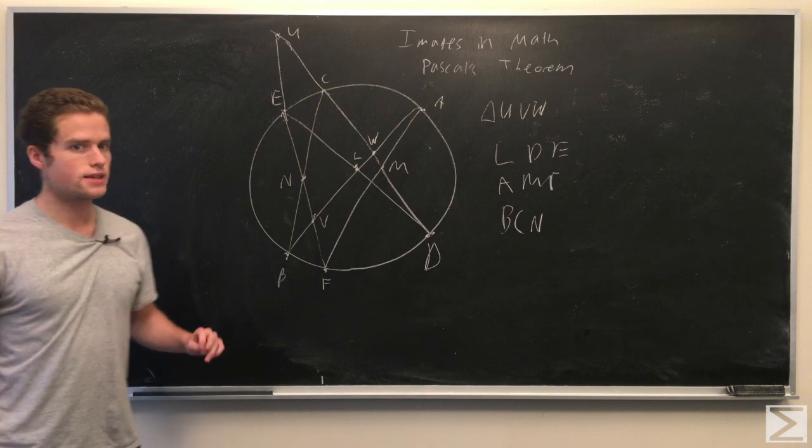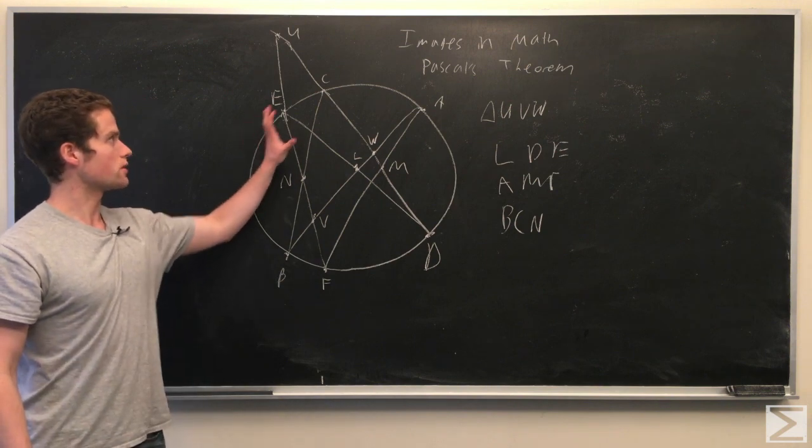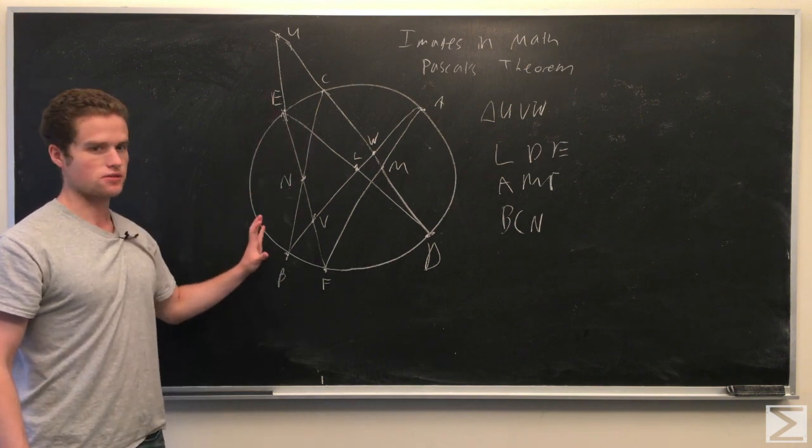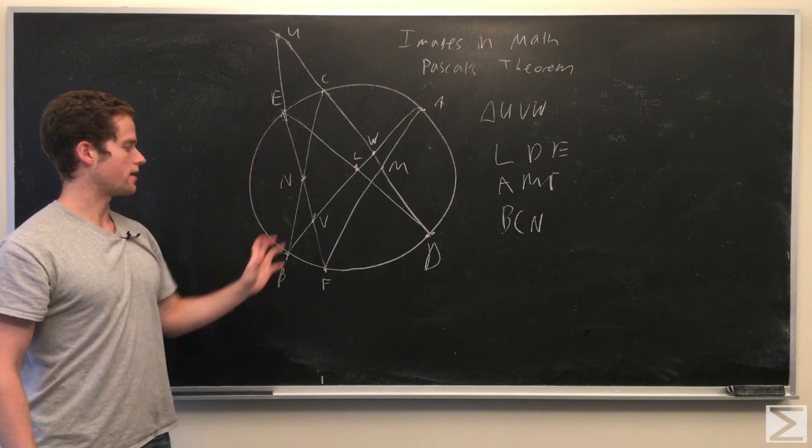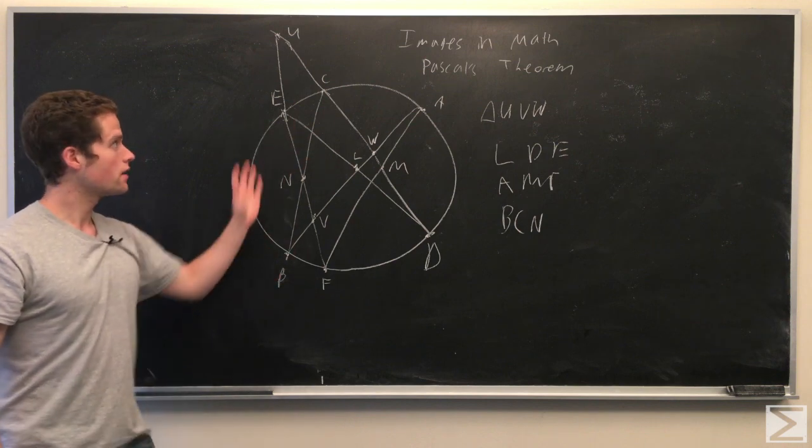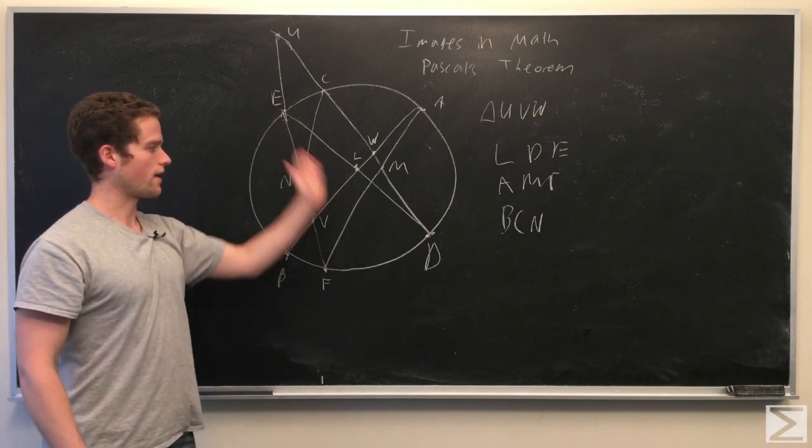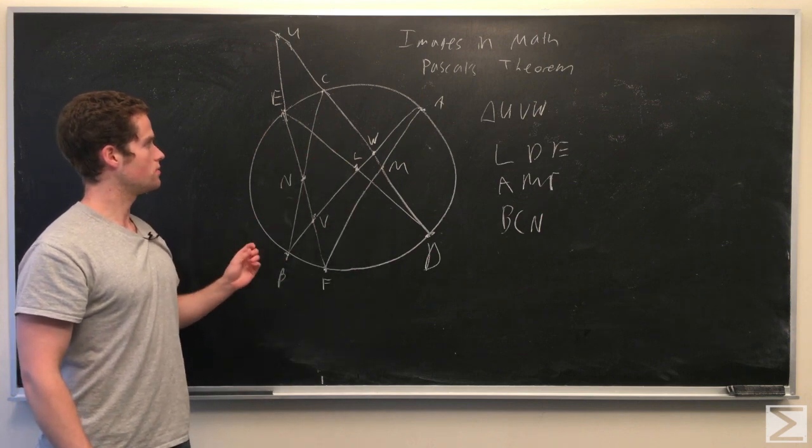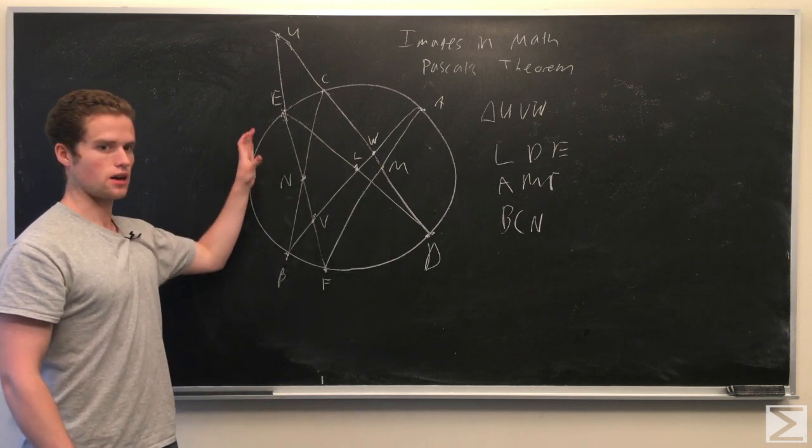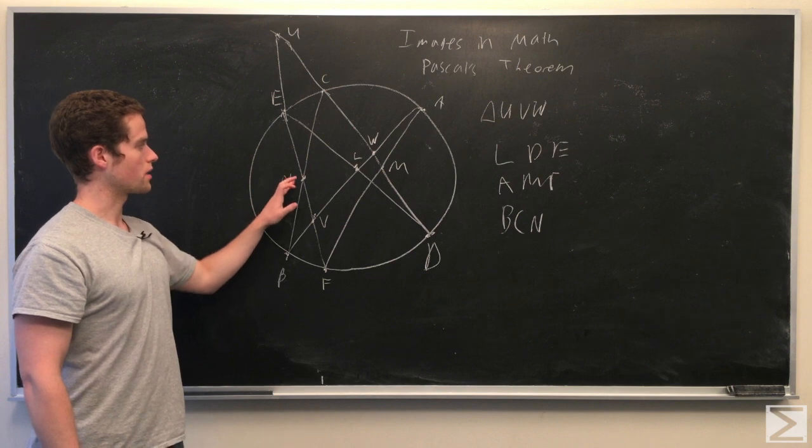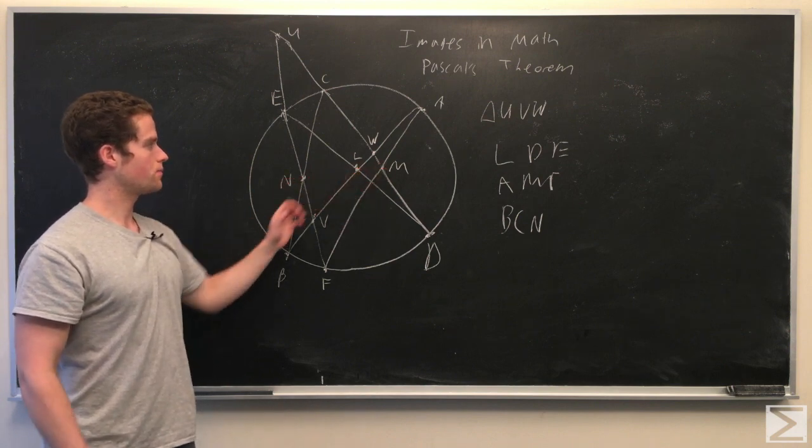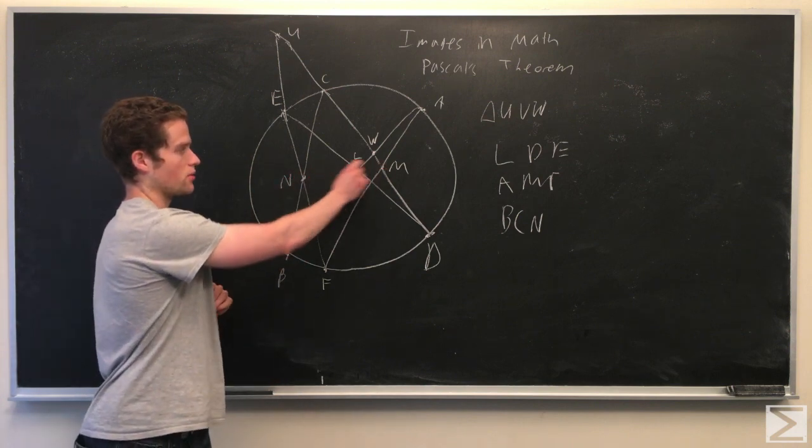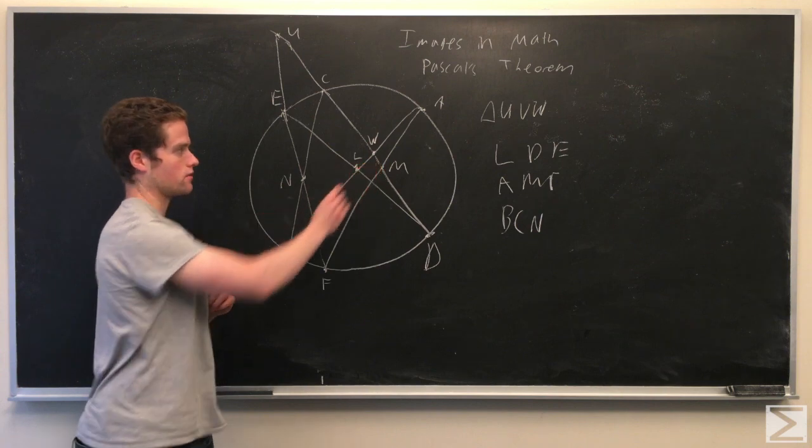Pascal's Theorem is that we have six points on a circle, ECA, BFD here. We draw diagonals of a circle and we intersect opposite diagonals and we get points N, L, M. These three points, N, L, M, are collinear. That's Pascal's Theorem.